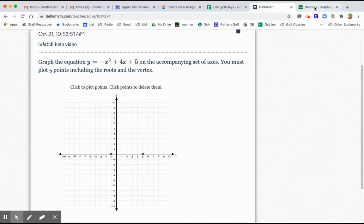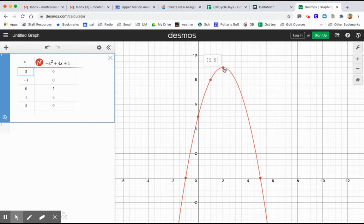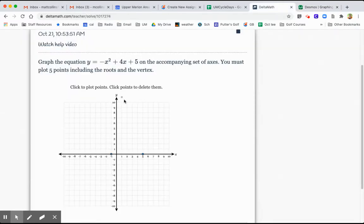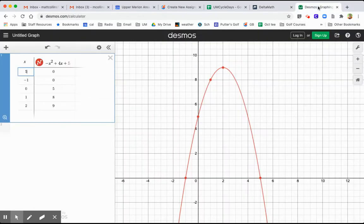I think 2, 9 was the, yeah, 2 comma 9 was the vertex. So let's throw that in there. So over 2 up to 9. And then I just need two other points. I think 0, 5 was a point and 4 comma 5. And as soon as I plot that, it generates a parabola that looks exactly like what I had on Desmos.